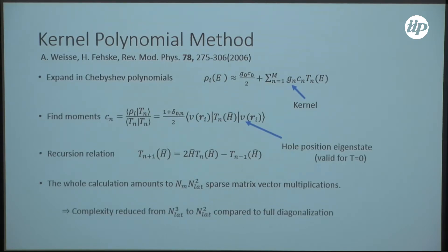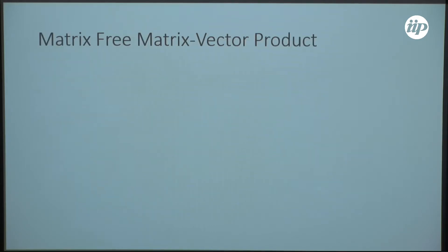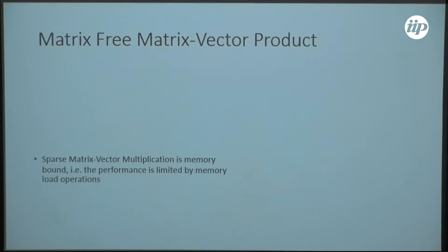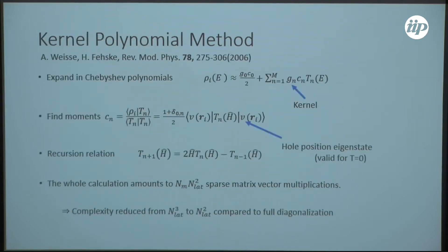As our matrix is very sparse, this works very efficiently. With respect to full diagonalization, we reduced the complexity of our problem from N³ to N² lattice sites. Through this we were also able to increase the system sizes we can calculate by a factor of five with respect to the closest prior work in the literature.